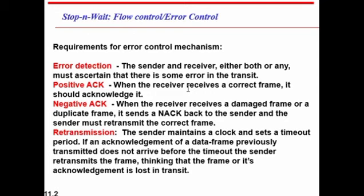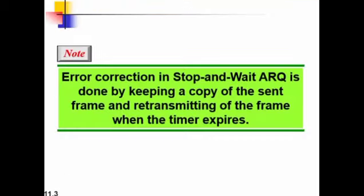In the retransmission process, the sender maintains a clock and sets a timeout period. If an acknowledgement does not arrive before the timeout, the sender retransmits the frame, assuming either the frame or its acknowledgement was lost in transit. In stop-and-wait ARQ, error detection is done by keeping a copy of the sent frame and retransmitting it when the timer expires.